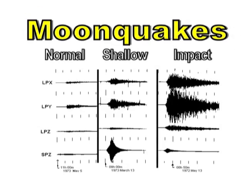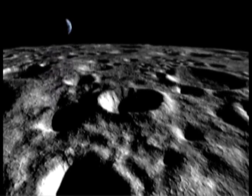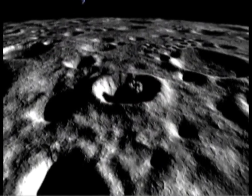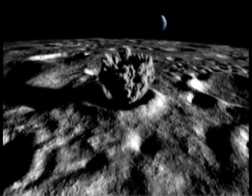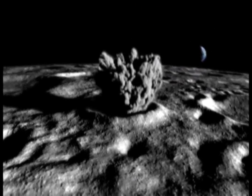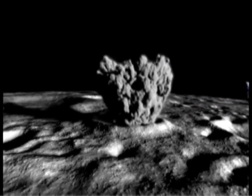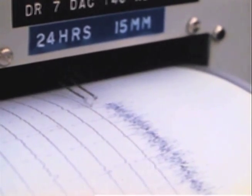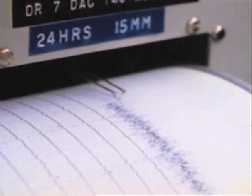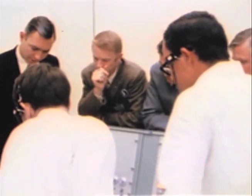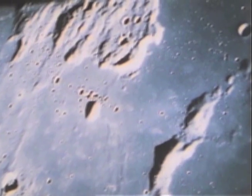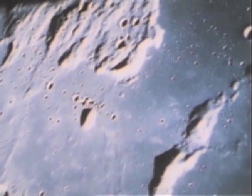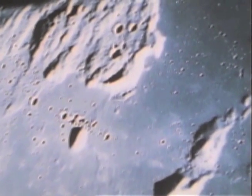On the moon we have three main types of seismic activity. We have impacts, which is usually meteorites that are actually impacting the surface of the moon. Another type are shallow moonquakes — they're not associated with plate boundaries, but on the moon we don't really know what causes these, and they're relatively rare.